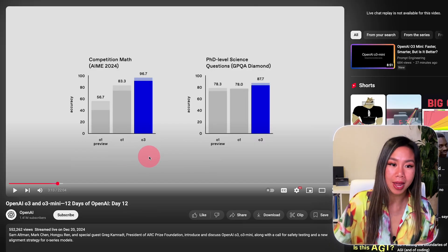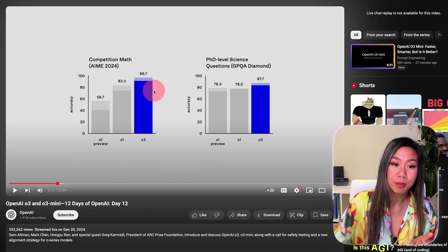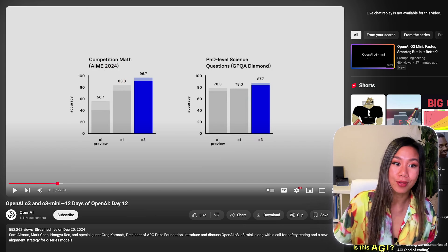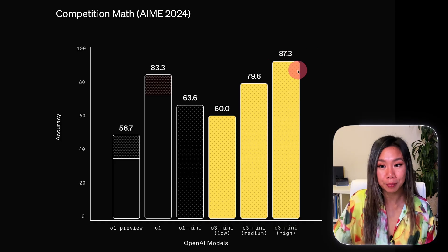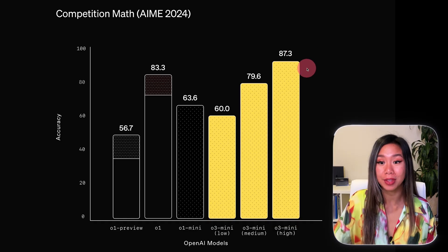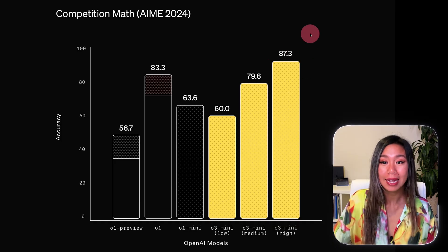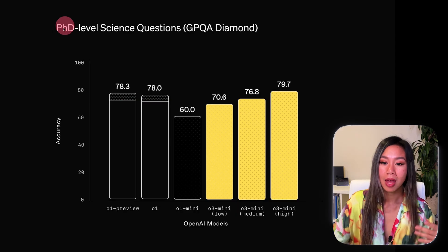That was part of the announcement by OpenAI back in December. The full O3 model gets a 96.7 on the same benchmark — basically 10 percentage points higher than this one, getting a near perfect score.